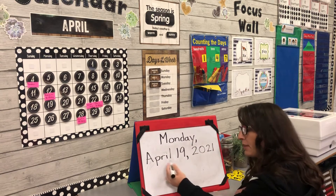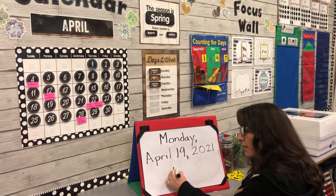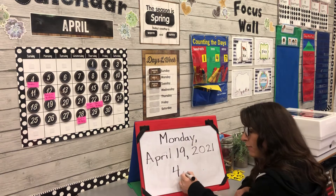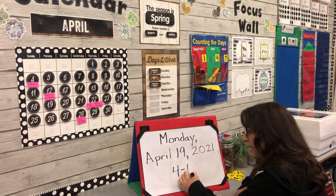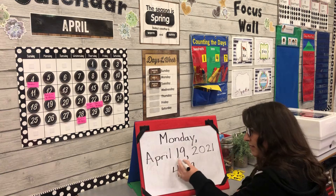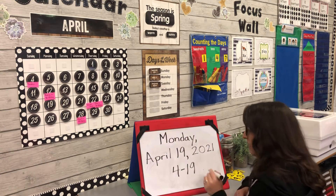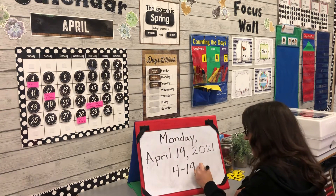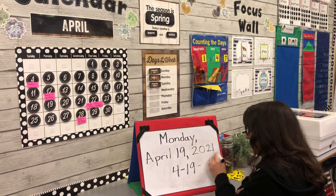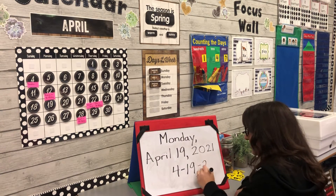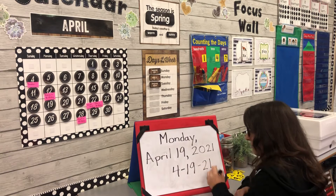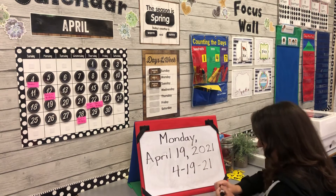April is the fourth month, so to write it the short way you would write 4-19, since the 19th is the day we're in April, and the last two digits of the year are 21 — so 4-19-21 is the short way to write today's date.